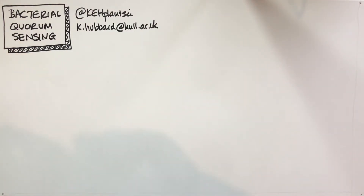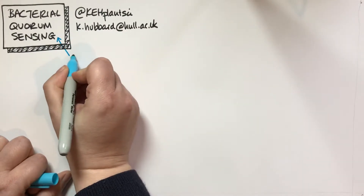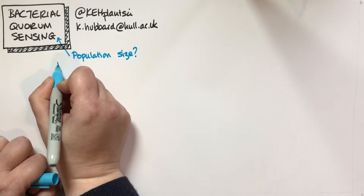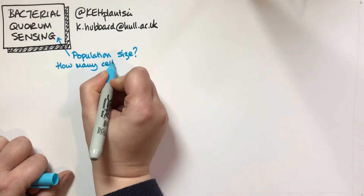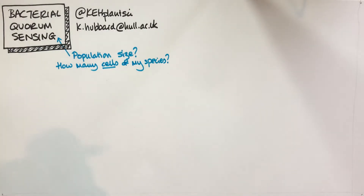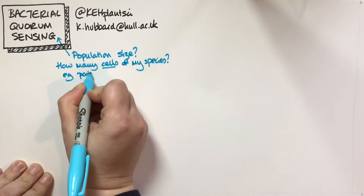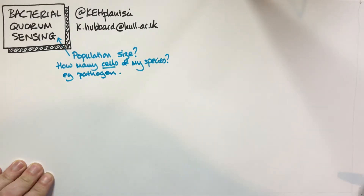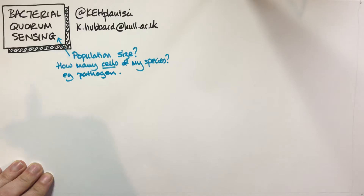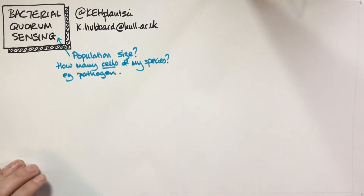This video is going to think about a bacterial signalling system known as quorum sensing. Quorum sensing is about knowing the population size - fundamentally this mechanism is about asking how many cells of my species are present in an environment. This can be used for all sorts of different things, for example by a pathogen. A pathogen actually isn't pathogenic until it reaches a certain population size. It might be relatively benign until it reaches a certain cell density, then it switches on its pathogenicity genes to cause disease in the organism. That's quite commonly used in pathogens.